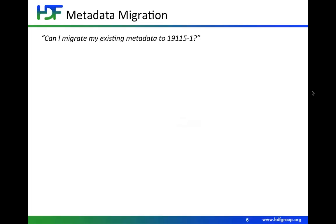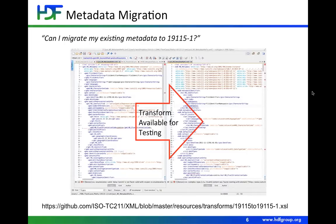If you have existing metadata that you'd like to migrate to 19115-1, the standard includes a transform which transforms 19139 metadata to 19115-3. This transform is also available on that GitHub repository. It's particularly helpful for me to have a diverse collection of records to test with, because as many of you know, people do things in slightly different ways.